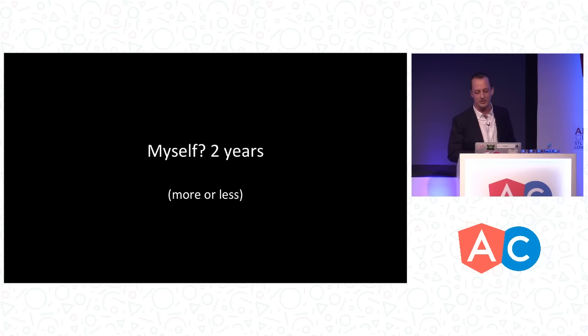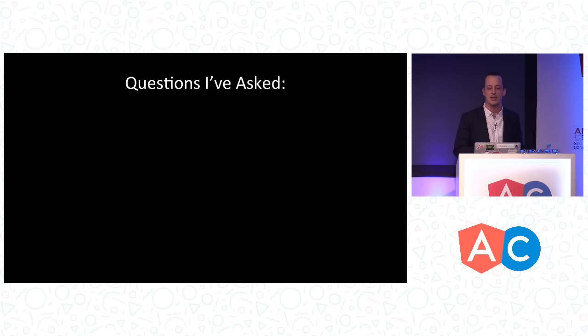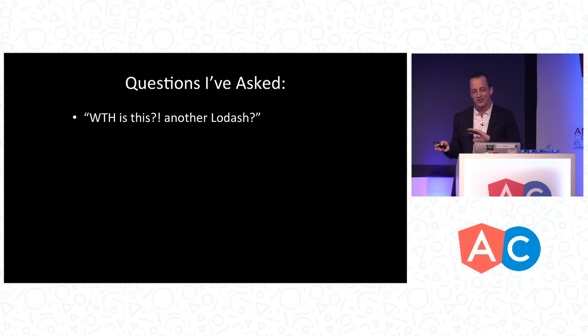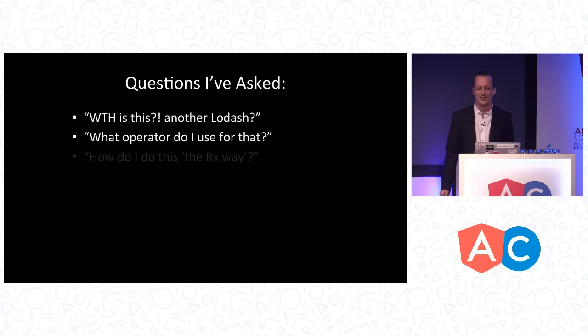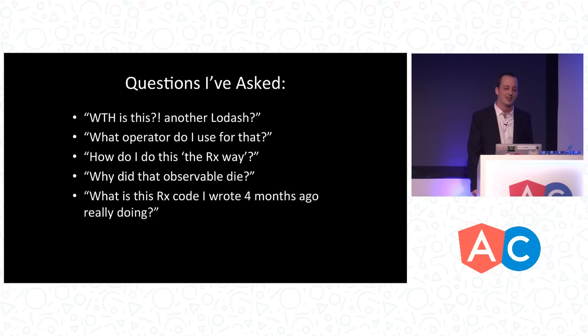RxJS is actually more than nine years old. It was created by Matt Podwysocki a long time ago as part of Microsoft Project Volta, which was targeting compiling C# to JavaScript — they wanted to compile Rx.NET to JavaScript. Not too long ago I was pretty new to this. Questions I asked when I was new: first, what the hell is this, another Lodash? Why do I need this? Then once I got into it, I kept asking: what operator do I use for that? Why did that observable die? I put a catch in there, it shouldn't be dead. What is this Rx code I wrote four months ago and what does it really do?